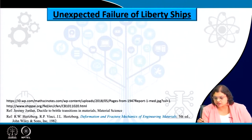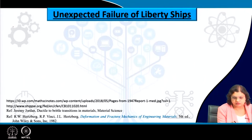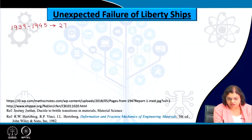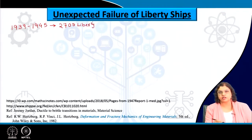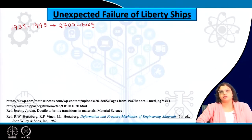Over this period of around 1939 to 1945 — a span of six years — more than 2,700 Liberty ships were built. Different sources specify this number slightly differently, but more or less there was a huge number of ships built over this period.